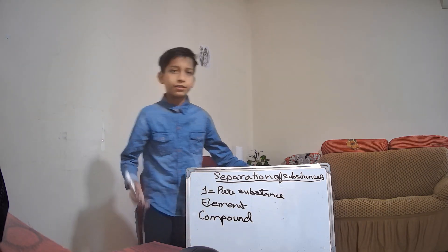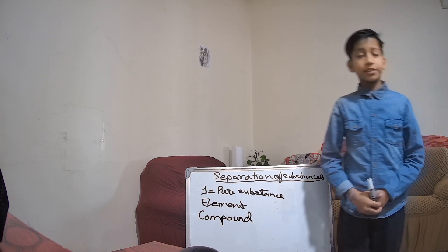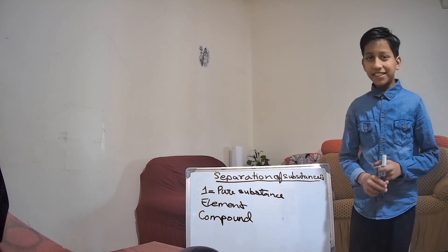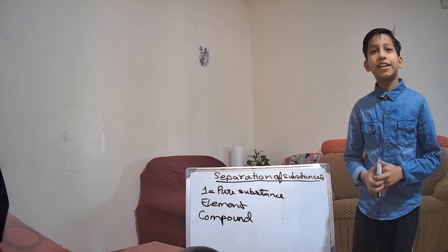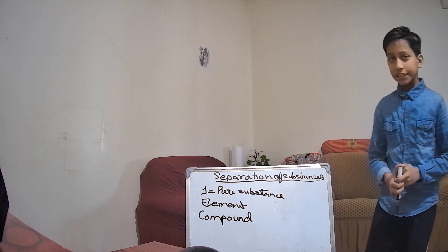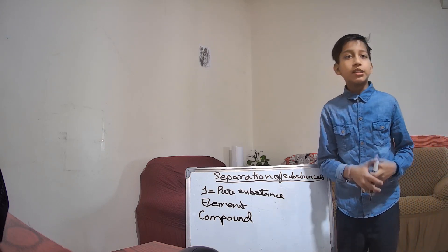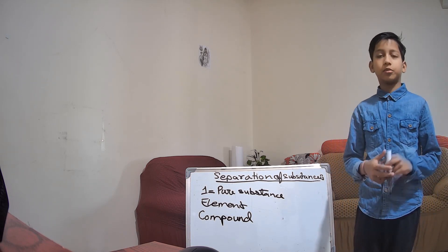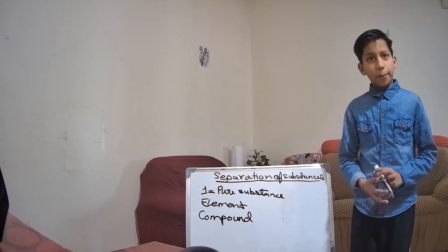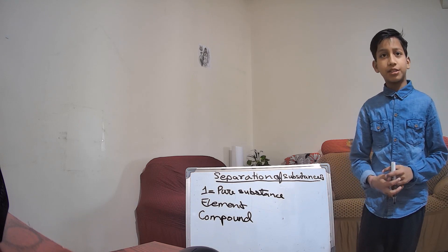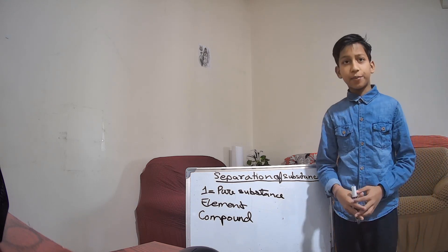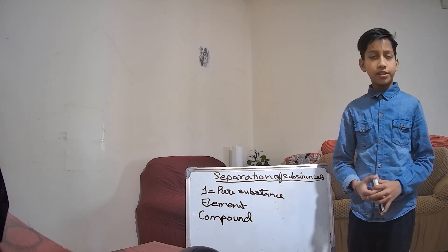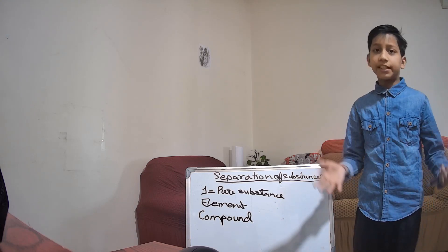So, what is an element? Element has one kind of particles, such as iron, silver, and gold. Please note it down. Compound has many types of atoms — sorry — compound has many types of atoms. As an example: sodium chloride, water, and carbon dioxide.